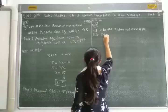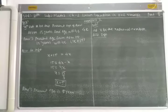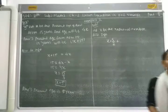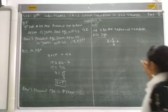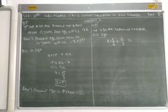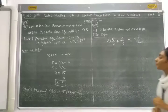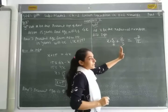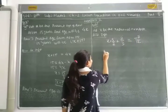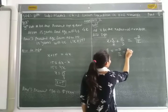Let x be the rational number. According to the information, x multiplied by 5/2, and add 2/3, gives minus 7/12. So we take the constant 2/3 to the right hand side; it becomes negative. So x times 5/2 equals minus 7/12 minus 2/3.